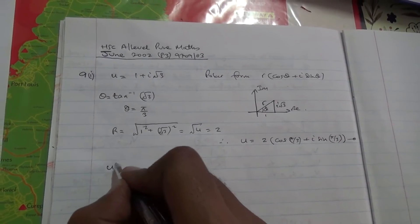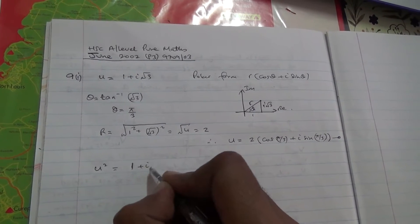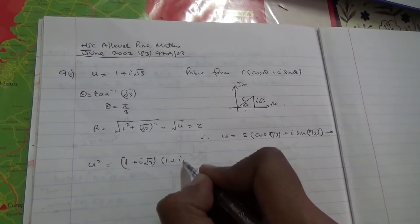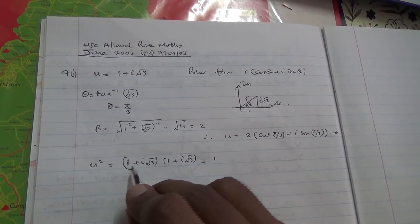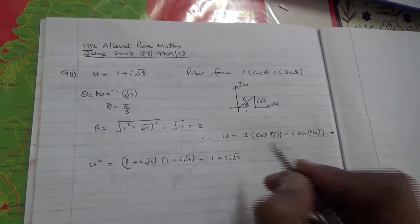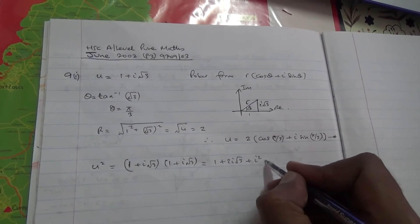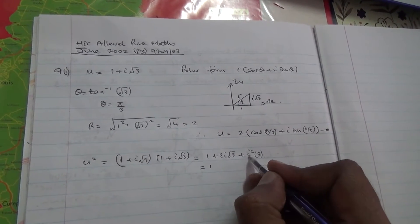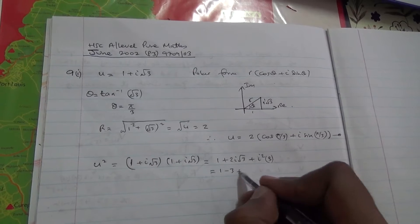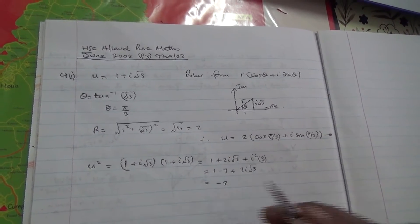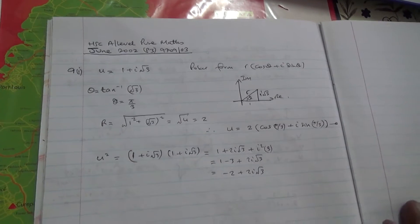We also need to find the modulus of u squared. First we evaluate u squared: (1 + i√3)(1 + i√3). Expanding: 1 times 1 is 1, and we get plus 2i√3 from the cross terms. Then i squared times (√3)² gives i squared times 3; since i squared is minus 1, that gives minus 3. So u squared equals 1 minus 3 plus 2i√3, which is minus 2 plus 2i√3.